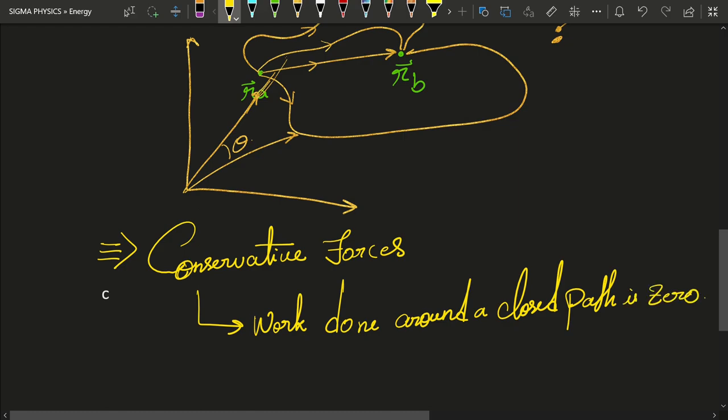Because if the particle has started from over here and it returns to the same place, the displacement is zero. And the work done by a conservative force depends upon exactly that initial and final position. And if there is no change in the initial and final position, then the work done is obviously zero.